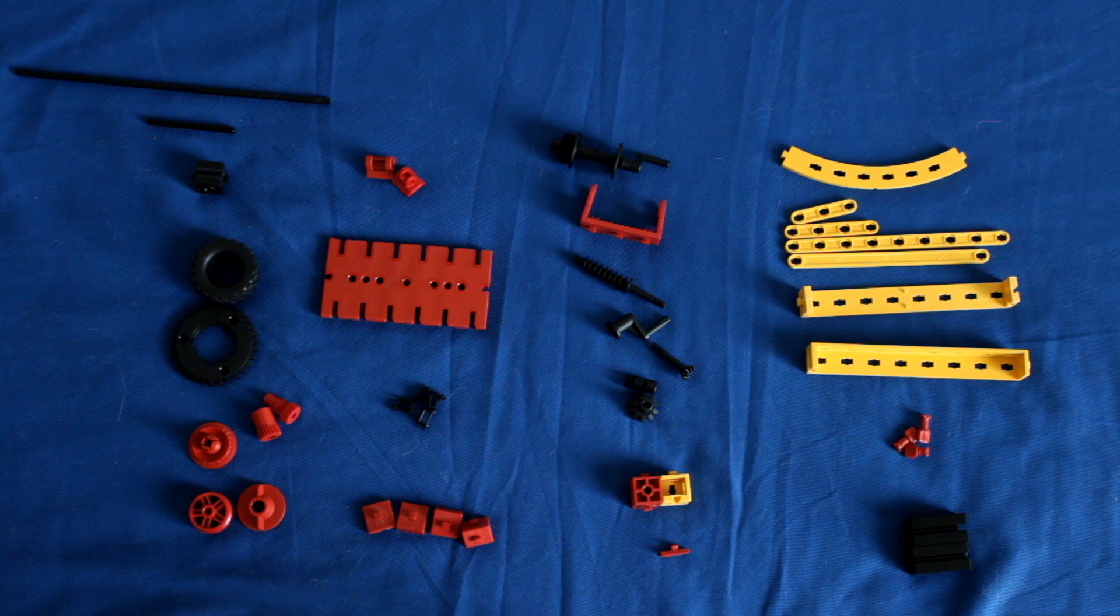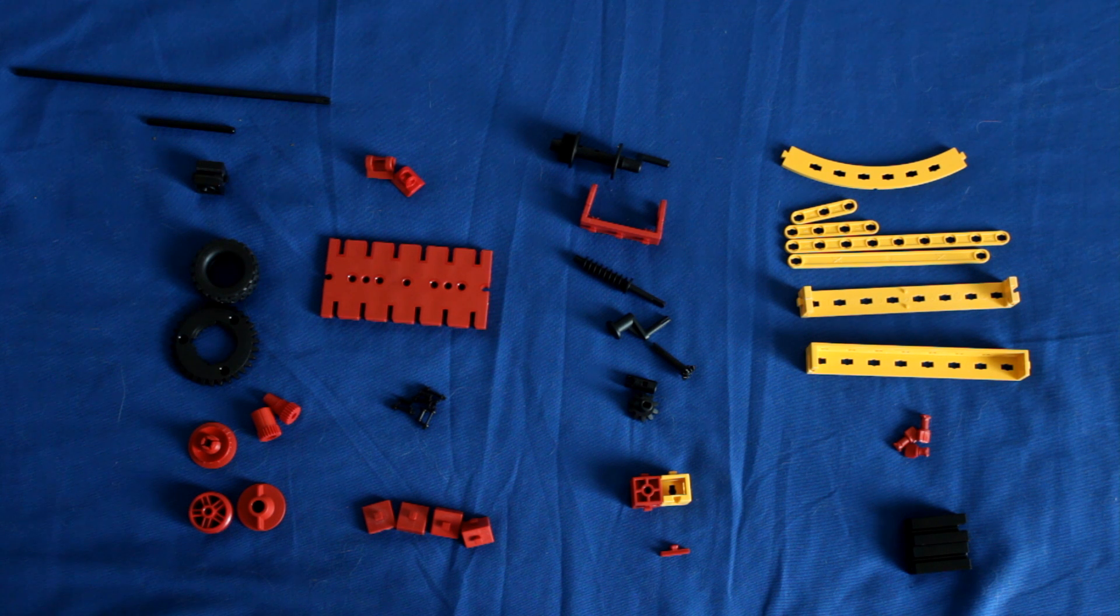To start off, the Fischer Technik system is a modularized system, so this means that a reference dimension is used and all of these components are based on the same dimension. The dimension in this system is 15 millimeters, which is the base measurement, so every piece in here is based on that 15 millimeter measurement. This makes the pieces easier to assemble, and the components fit together in a variety of ways depending on the design and what we want the parts to do once they're actually assembled.